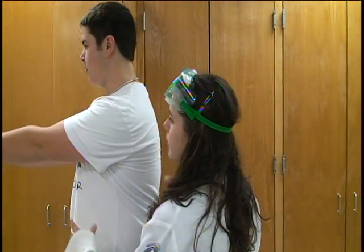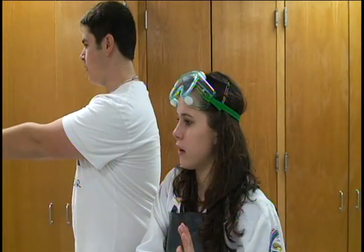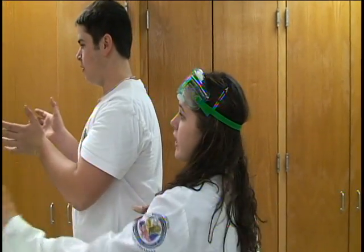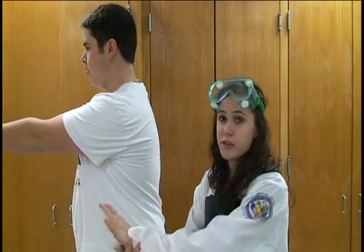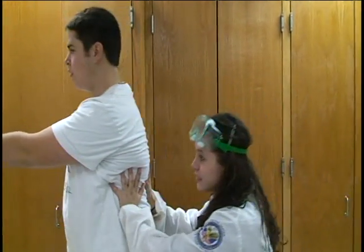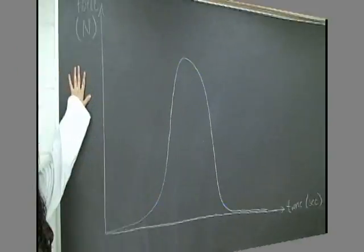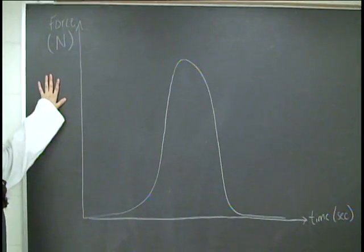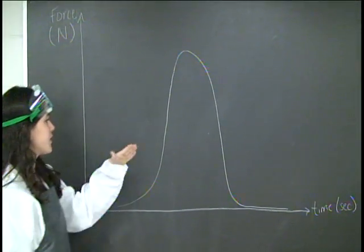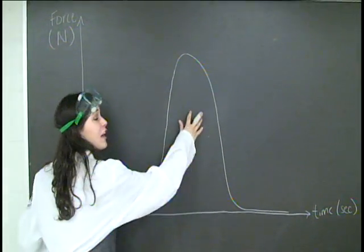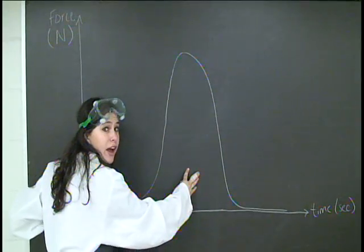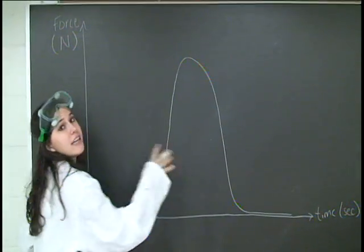In the next trial, we will push Matt into the force plate again, but his arms will buckle, representing an airbag, increasing the time interval, like so. These trials will produce a graph much like this one, where the area under the graph is the impulse.